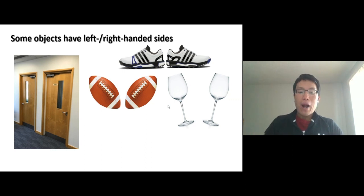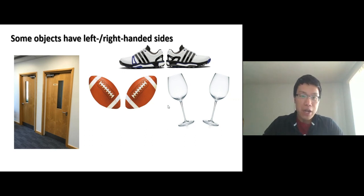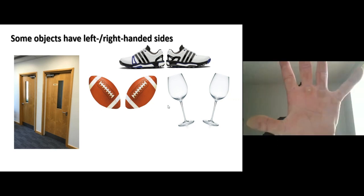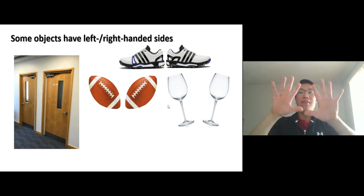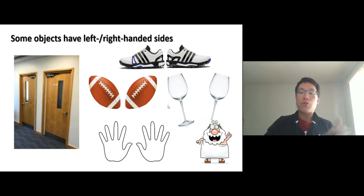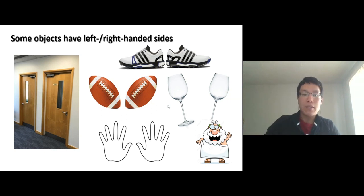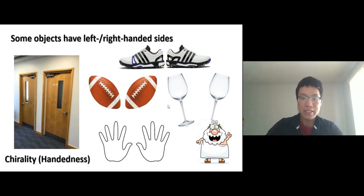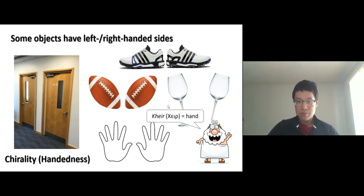If you go back in time — before Instagram was invented — Greek philosophers recognized that some objects have sides and others don't, just like hands. We have a left hand and a right hand. This property was recognized and called chirality, or handedness. Chiral comes from the Greek term 'kheir,' meaning hand. Some objects, like hands, have chirality, and others don't.